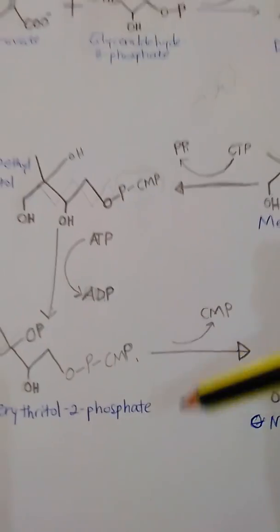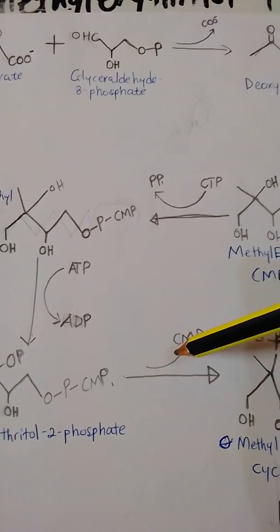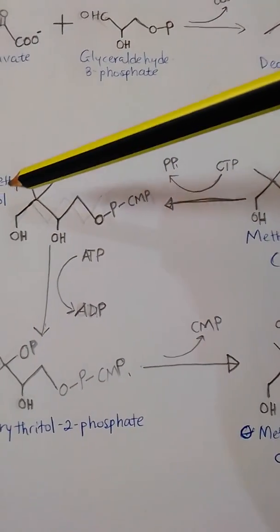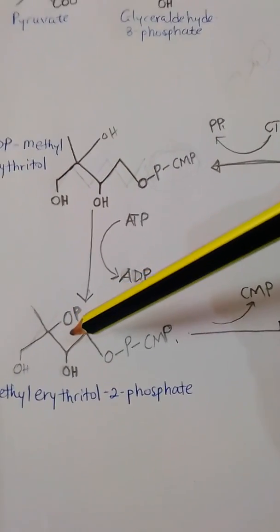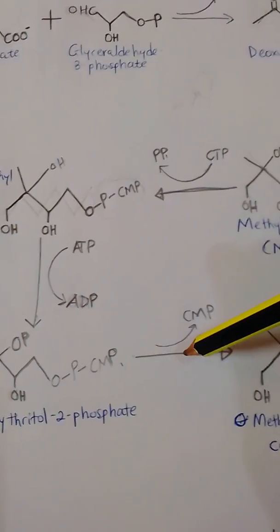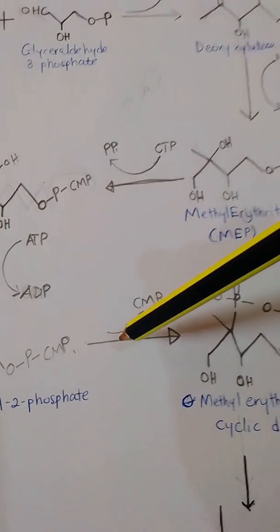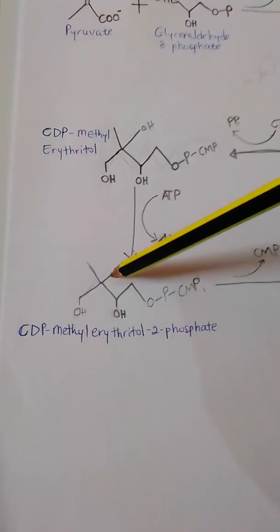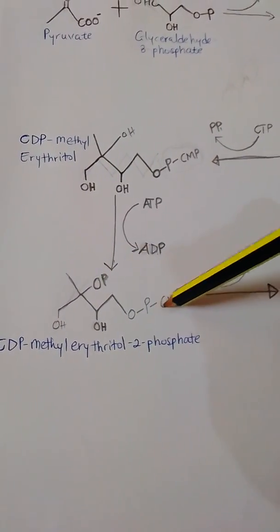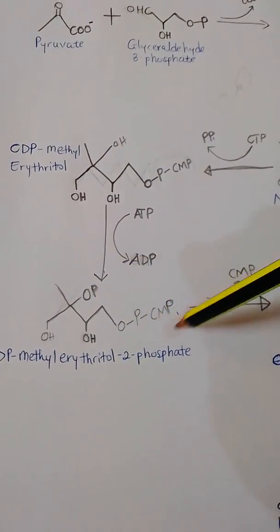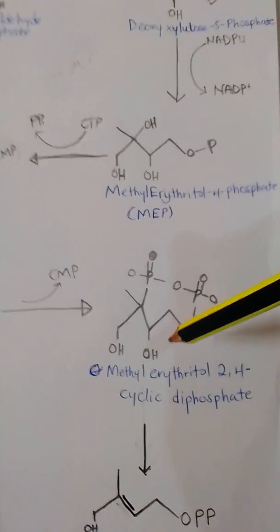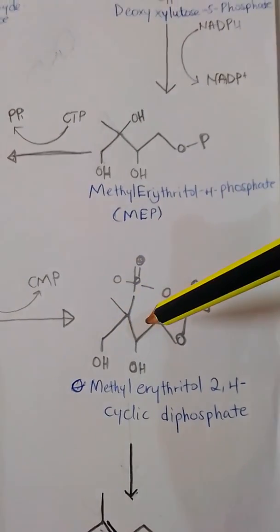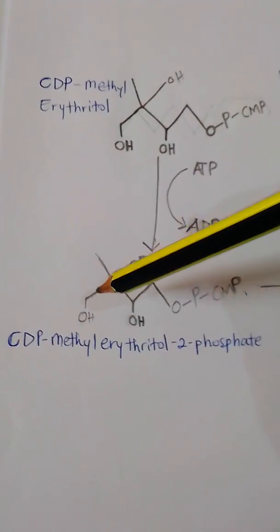The next reaction is the loss of the CMP. The CMP came in to activate the ring and improve the reactivity of the compound so the phosphate could be added. When the CMP leaves, there is a phosphate cyclization — the phosphate on the second carbon cyclizes with the other phosphate — to produce methylerythritol 2,4-cyclic diphosphate.